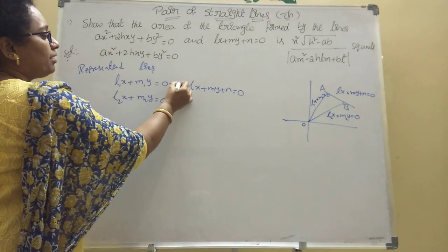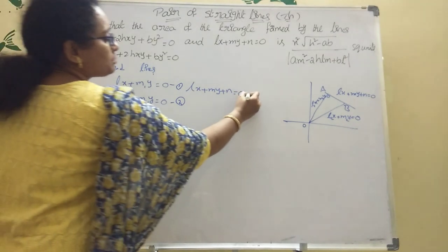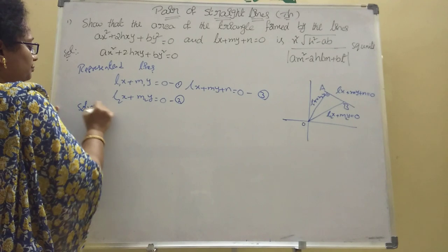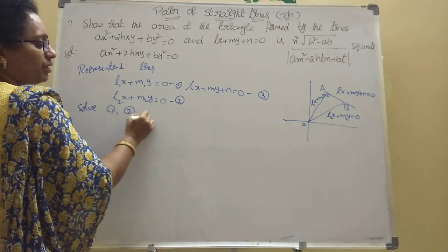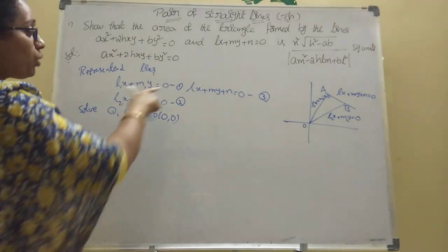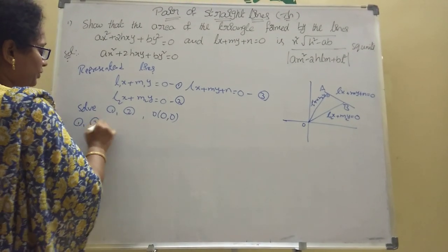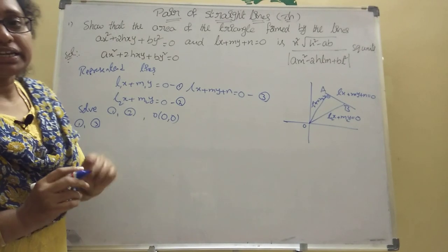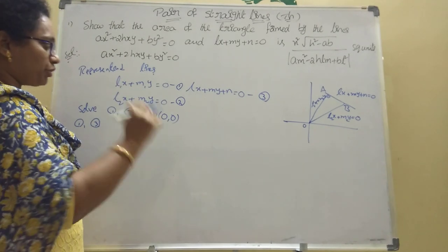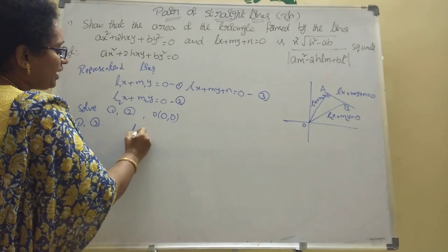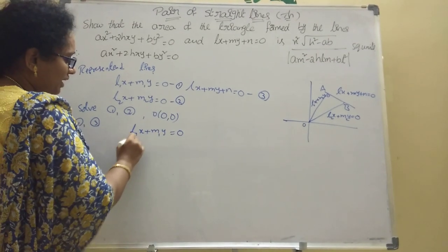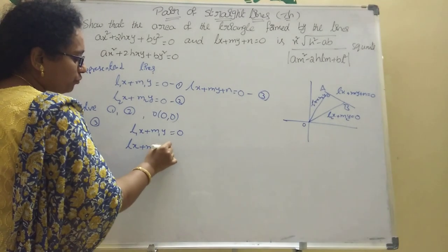Then it will be easy to find the area of the triangle. Taking line 1, line 2, and line 3: solve lines 1 and 2, we will get the origin (0, 0) as intersection point. Now solve lines 1 and 3. We are using the cross-multiplication method (YCX model) — I explained that model in a previous video. Right here: L₁X + M₁Y = 0, and LX + MY + N = 0 (first and third lines). Intersection point using YCX model: Y-coefficient you write first, then the constant.